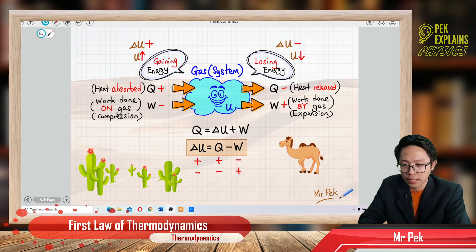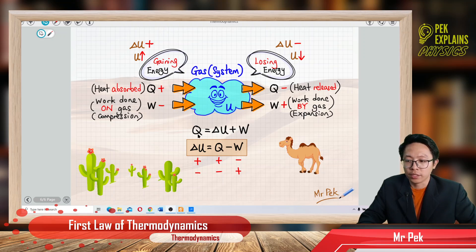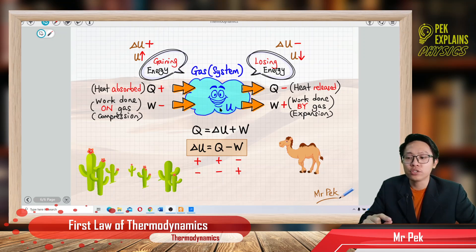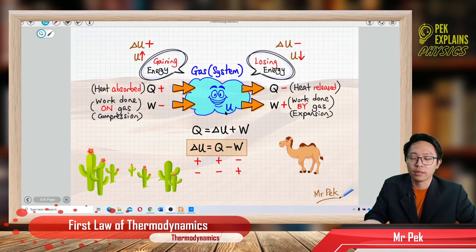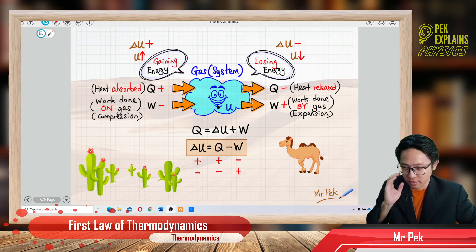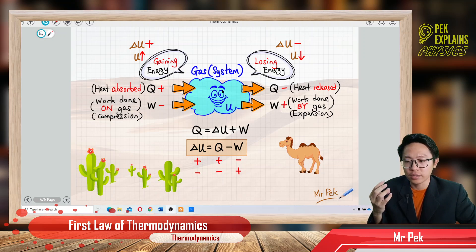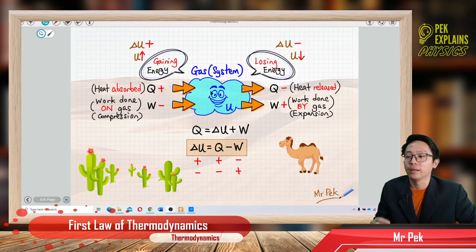Let us continue with the fourth part of our summary. This part still concerns the first law of thermodynamics: delta U equals Q plus W. This time I want to pay special attention to the change of internal energy of the gas, or the system. The gas has internal energy U, and sometimes this internal energy will gain energy, sometimes it will lose energy.